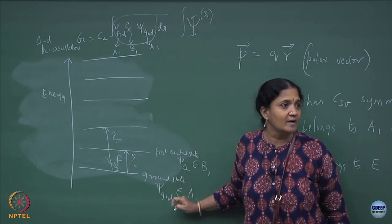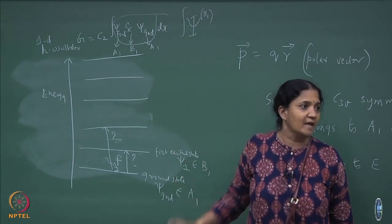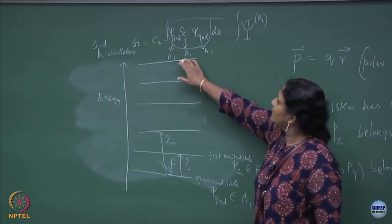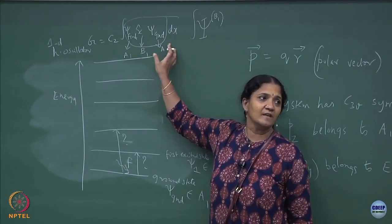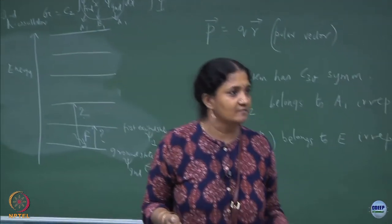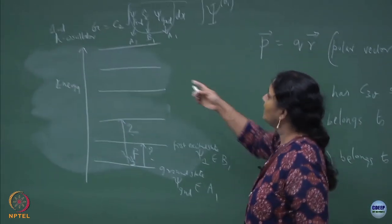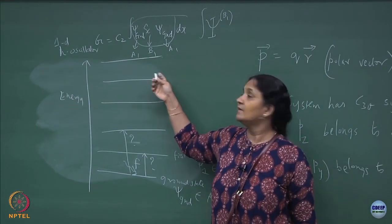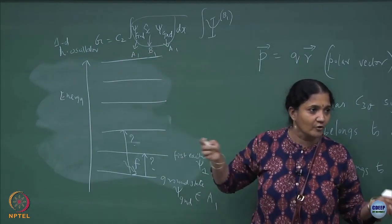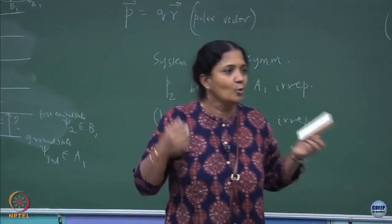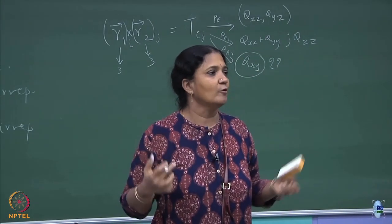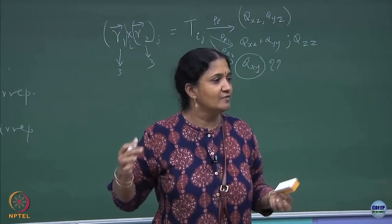Operators also belong to irreducible representations. If you take the x component of the electric dipole moment operator, it belongs to the B1 EREP of C2. If I blindly treat it like a tensor product of irreducible representations, I end up getting something which belongs to B1. By odd-even argument you have already argued this integral has to be 0. Now we want to see how to argue it is 0 from group theory.